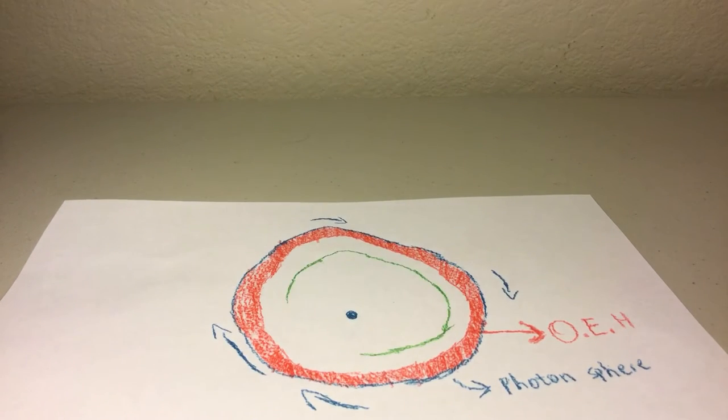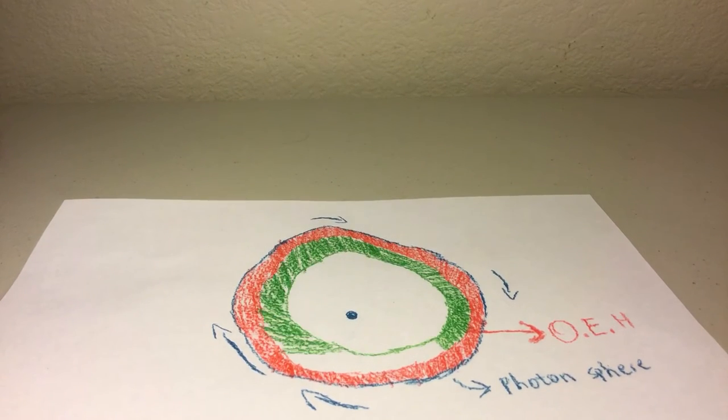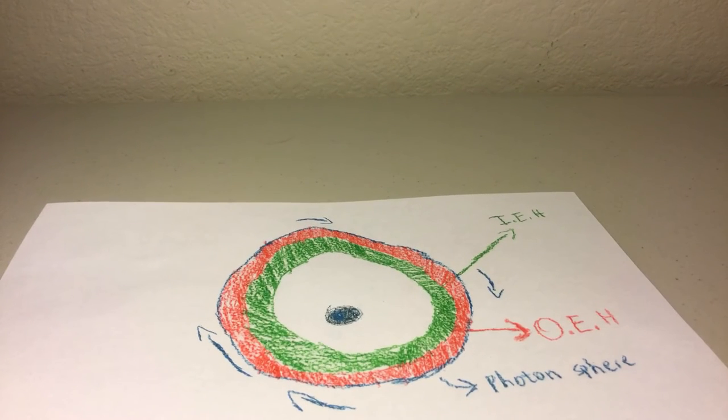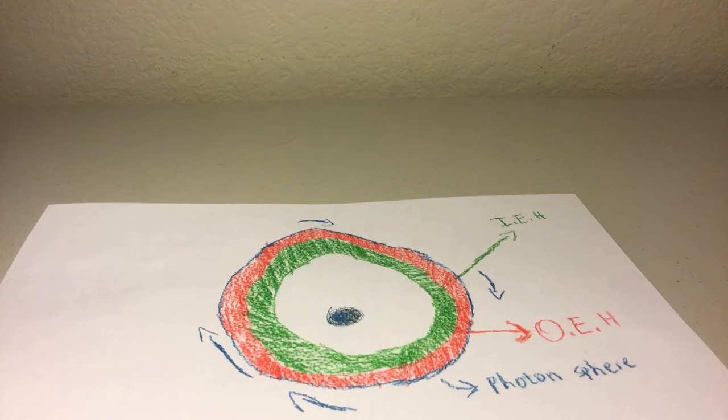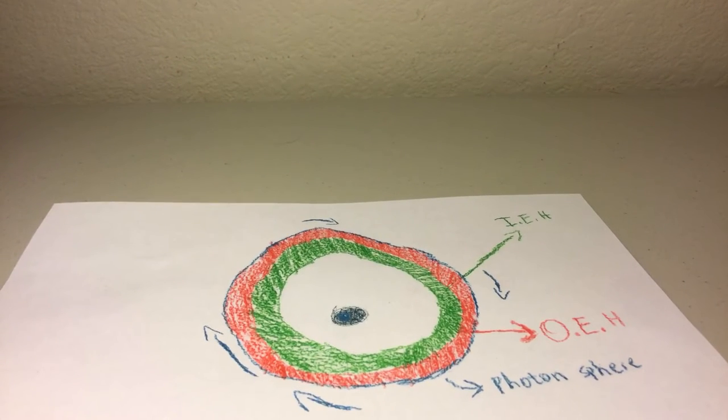The next layer is the event horizon. This part of the black hole has such strong gravitational pull, nothing can escape from it. And the dot you see is a singularity. The singularity is the main part of the black hole and is found at the center.